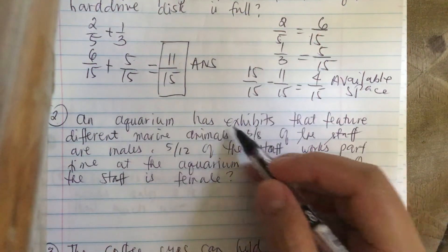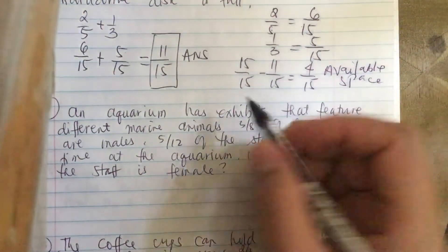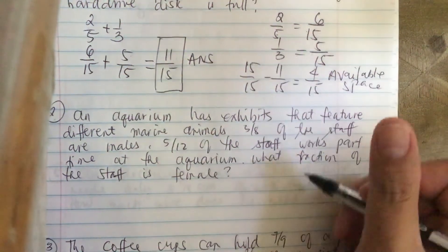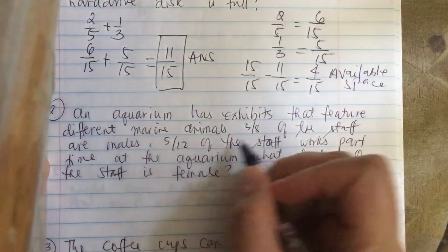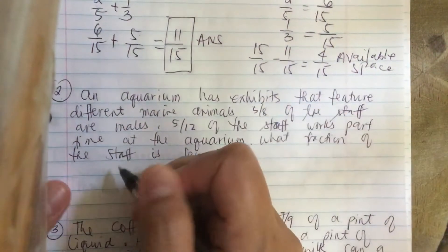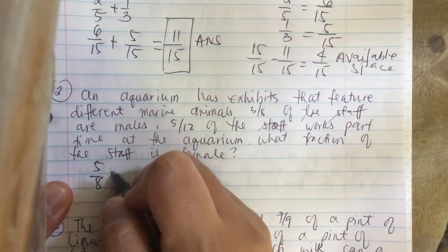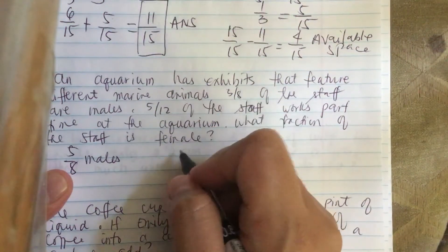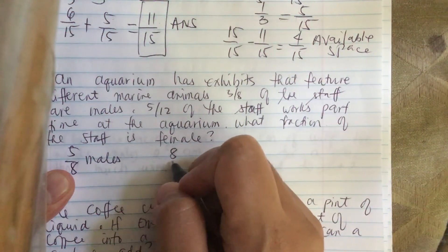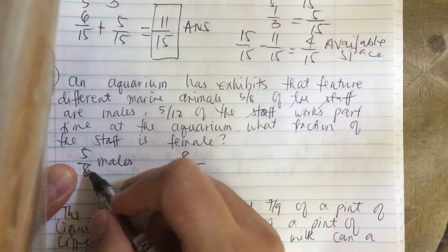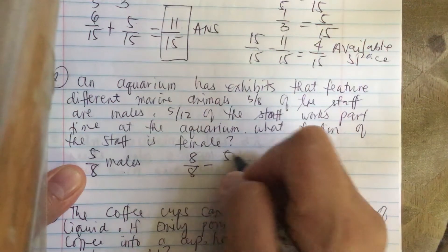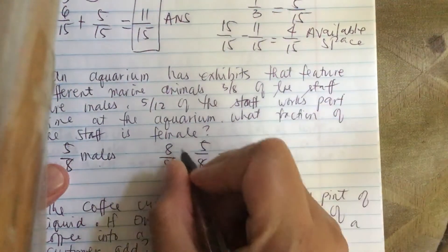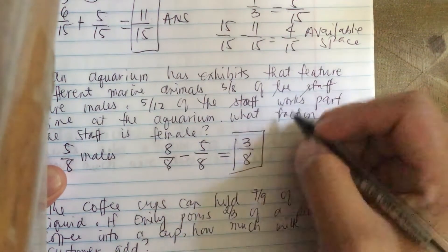Next problem. An aquarium has exhibits that feature different marine animals, and 5 over 8 of the staff are males. What fraction of the staff is female? The total number of staff is 8 over 8, or 1. So we subtract the male fraction: 8 over 8 minus 5 over 8 gives us 3 over 8. So 3 over 8 of the staff are females.